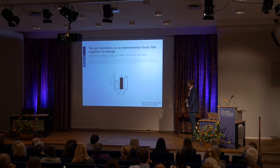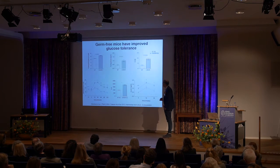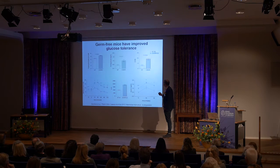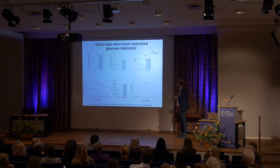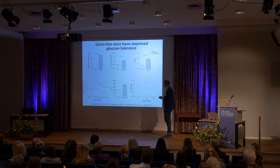If you recolonize these germ-free mice for just two weeks, you normalize the amount of body fat — so in mice, there is a strong causal relationship between body fat and microbiota. Regarding glucose metabolism, germ-free mice — being leaner — have reduced fasting blood glucose, reduced fasting insulin, and a reduced HOMA index, indicating lower insulin resistance compared to conventionally raised mice. Glucose injected intraperitoneally is also cleared faster in germ-free mice.